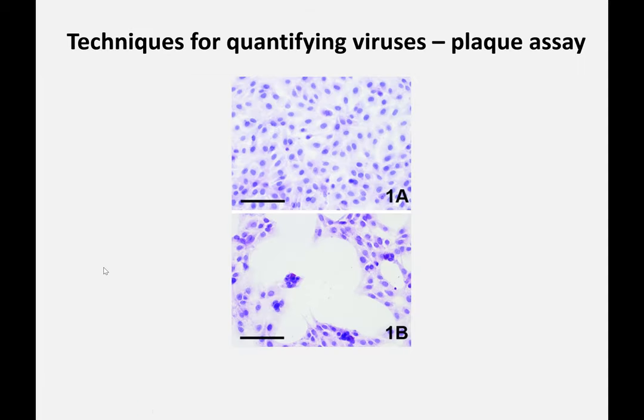Now let's switch gears and talk about techniques for quantifying viruses, because you'll come across these in papers. To know that you have a virus infection, somehow we have to be able to tell. We don't normally do this for common infections — if you go in for a sore throat, they'll swab for bacterial infection. We don't do a lot of viral quantification because we don't have many antivirals. But in the lab, we have techniques for quantifying viruses.